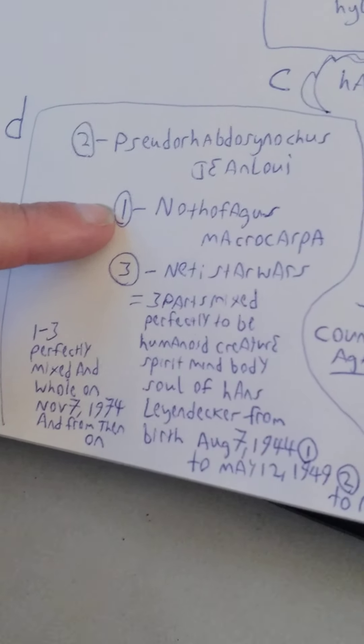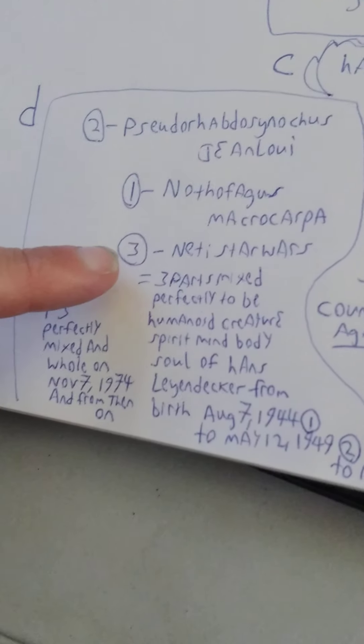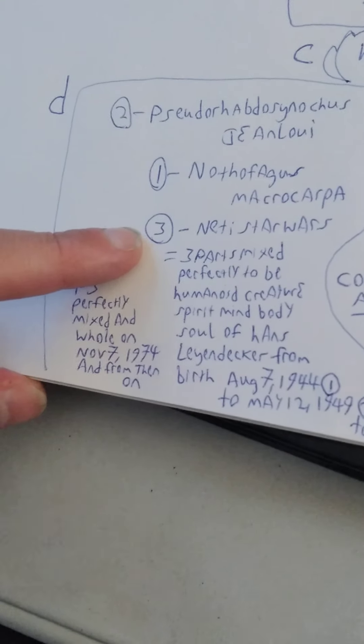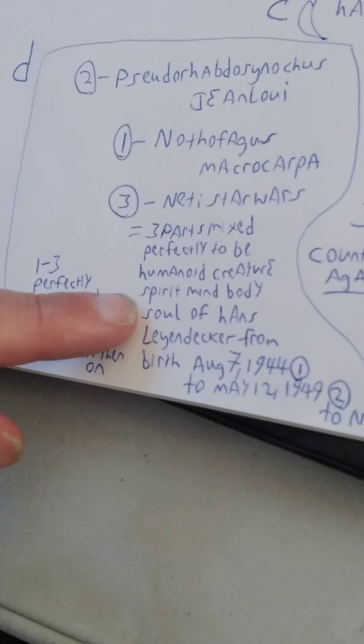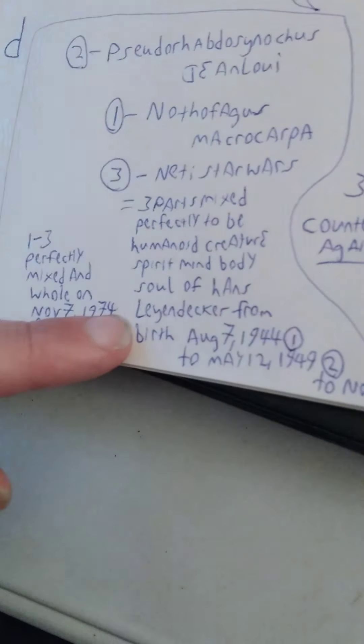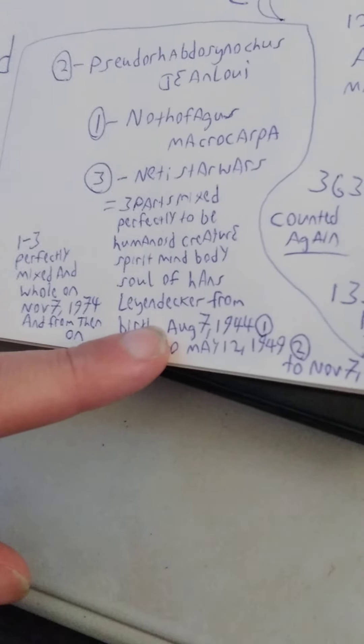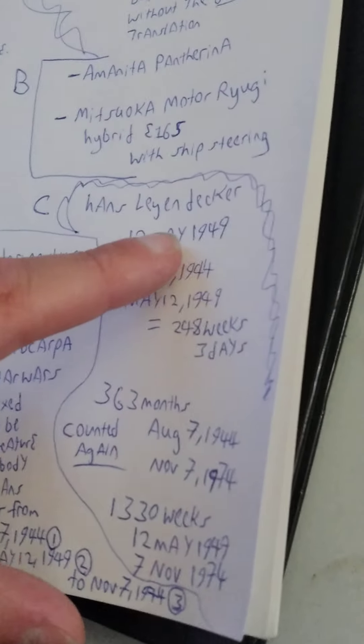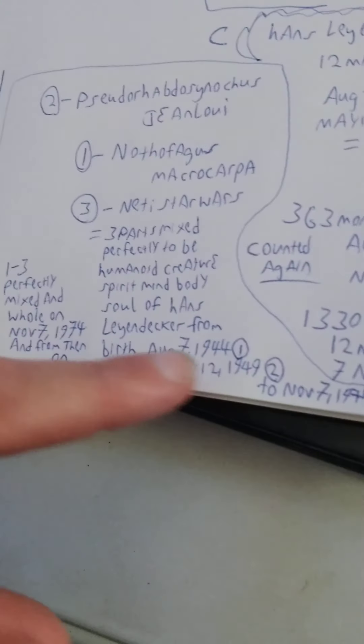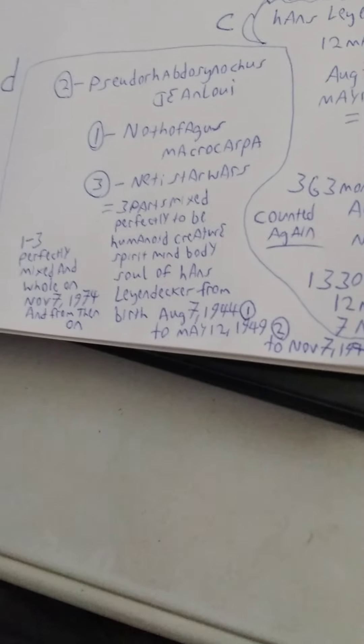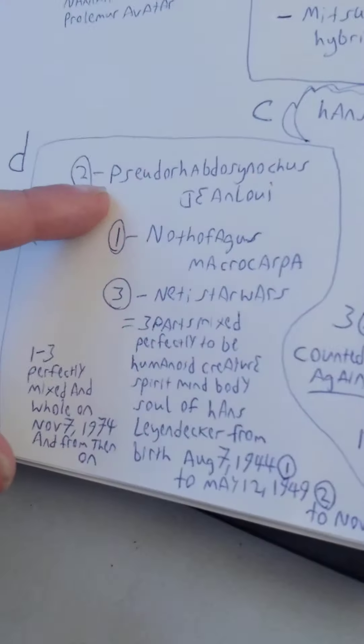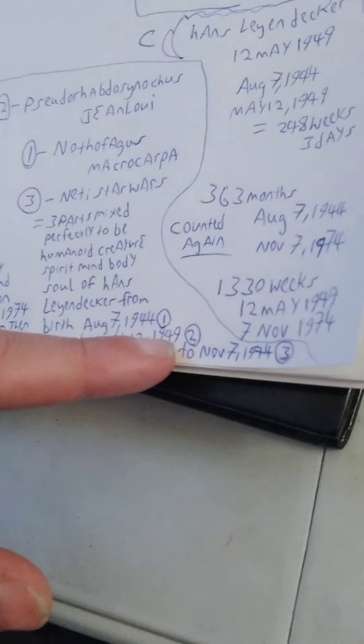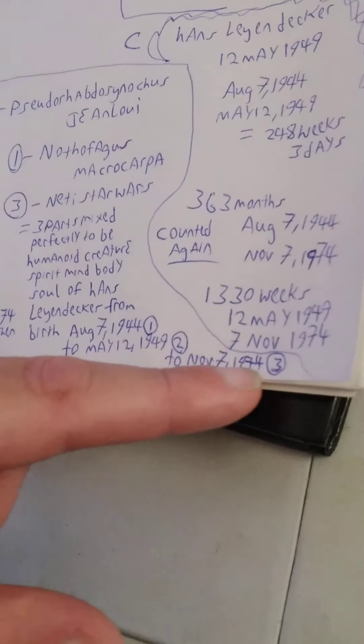So this one Pseudorhabdosynicus, Jean Lowie. Number one is Nothophagus macrocarpa and three is an Neti from Star Wars, the species. Equal three parts mixed perfectly to be humanoid creature, spirit, mind, body, soul of Hans Leyendecker from birth August 7th, 1944, different from 12 May 1949, his actual what they said was him was when he got